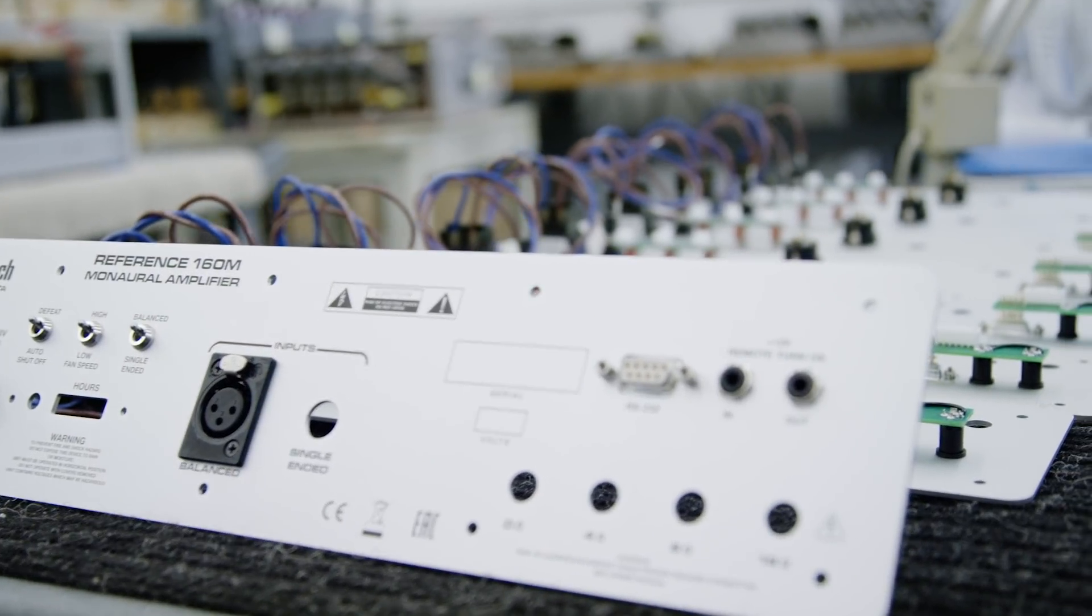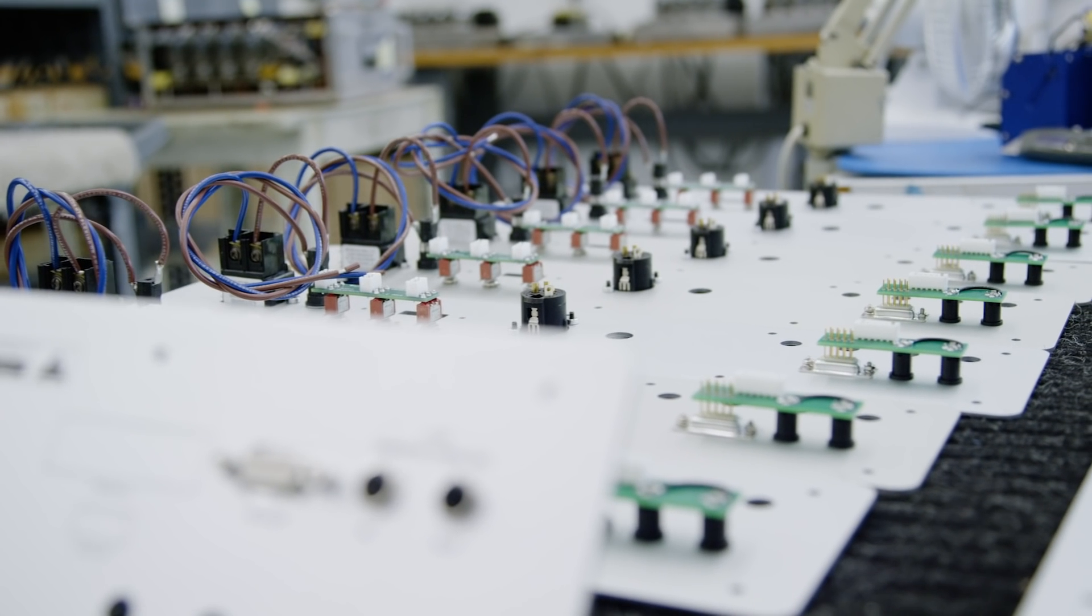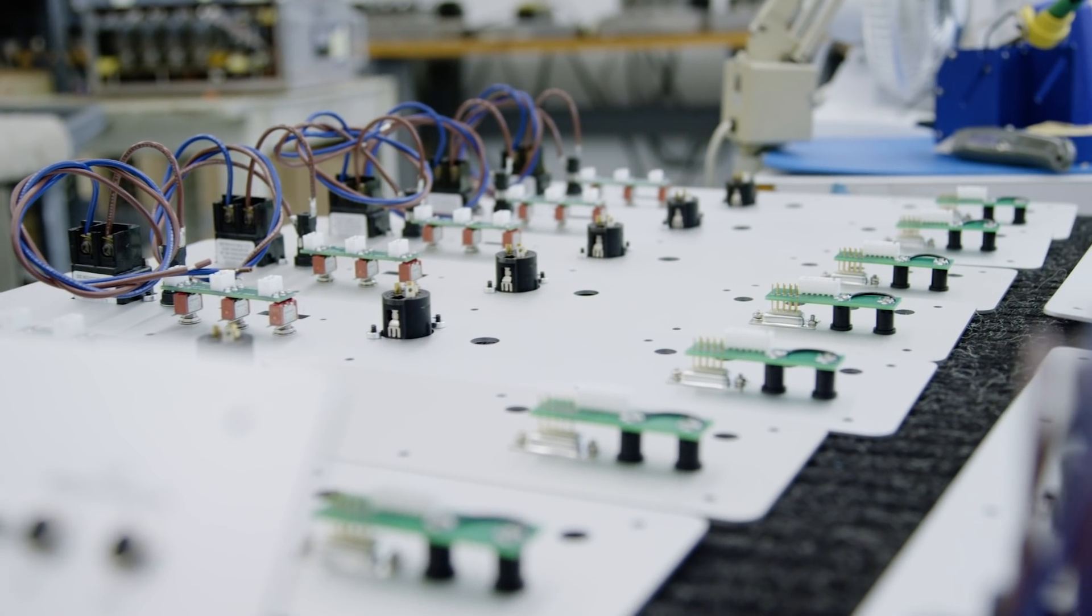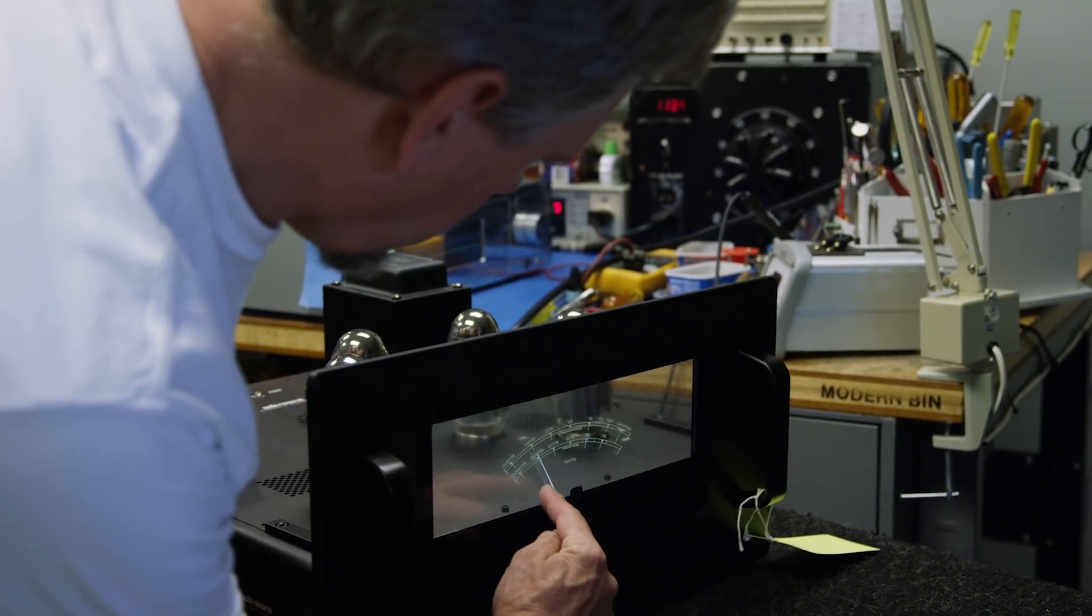Ultralinear mode is basically a pentode mode of operation. It has twice the output power of the triode mode so you can drive less efficient speakers. Some people prefer the triode mode which sounds a little smoother than pentode mode or ultralinear mode. It's just personal preference of the listener.